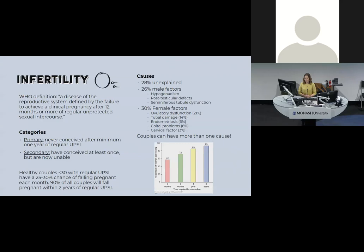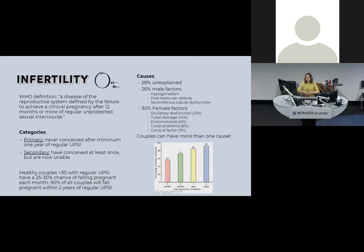We usually start investigating fertility in people without risk factors at one year. If people are over 35 or 40, have had pelvic radiation or chemotherapy, you'll obviously be investigating and counselling them a lot earlier. The causes of infertility are fairly split: 28% unexplained, 26% male factors, 30% female factors, and some couples are unfortunate enough to have both.